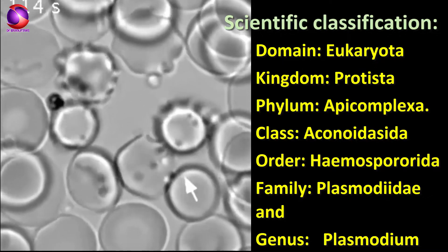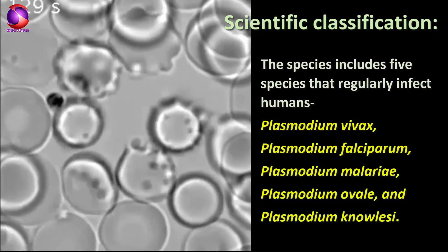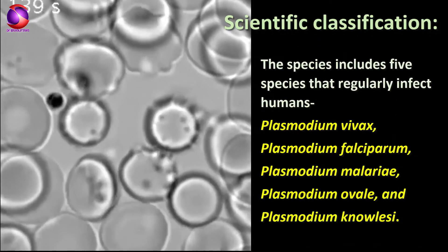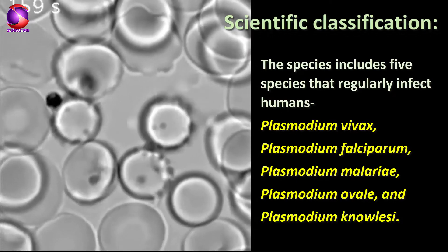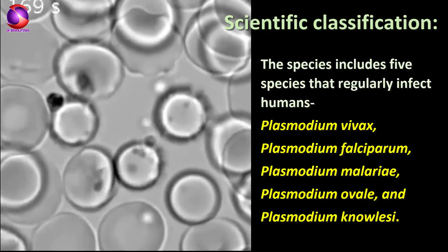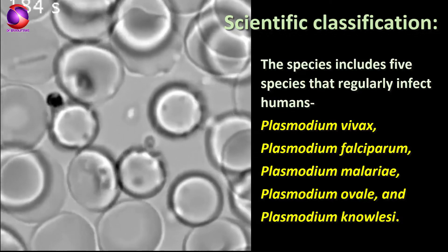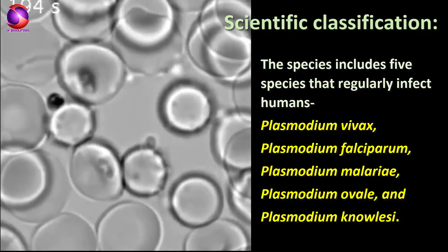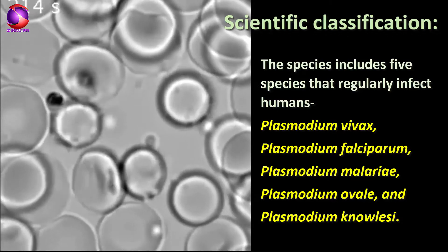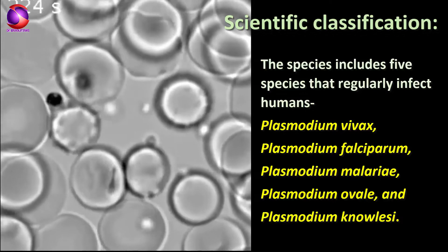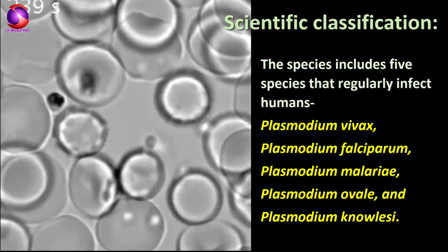and genus Plasmodium. The five species that regularly infect humans are Plasmodium vivax, Plasmodium falciparum, Plasmodium malariae, Plasmodium ovale, and Plasmodium knowlesi. Plasmodium falciparum is the most lethal parasite for humans and causes hundreds of thousands of deaths per year worldwide.